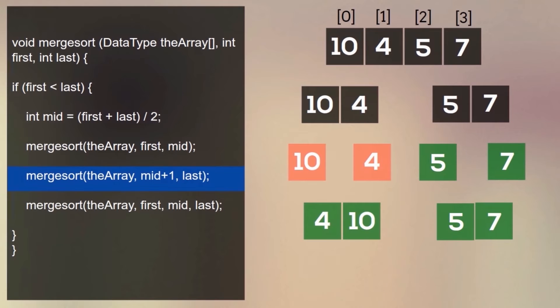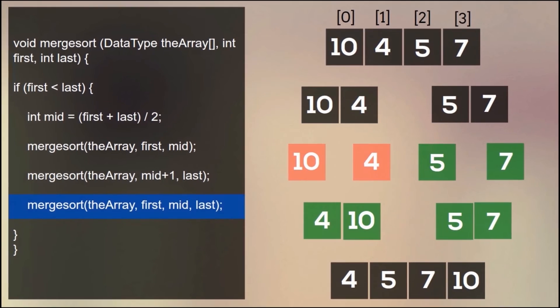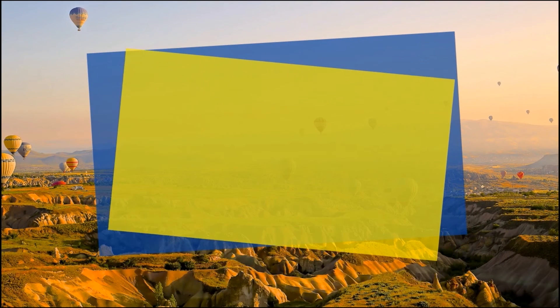And last index is three. Lastly, sorted arrays are merged into one sorted array with a merge function with parameters of the array. First index is zero, middle index is one, and last index is three.